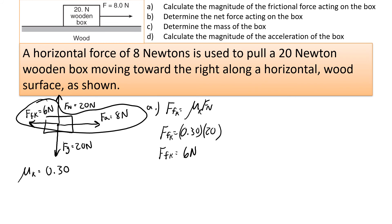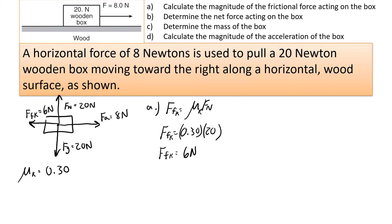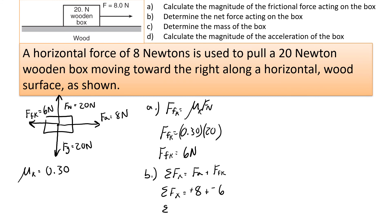These forces are not balanced, so we'll accelerate in the direction of the applied force. For the net force in the X direction: positive 8 Newtons to the right plus negative 6 Newtons to the left gives a net force of 2 Newtons to the right.